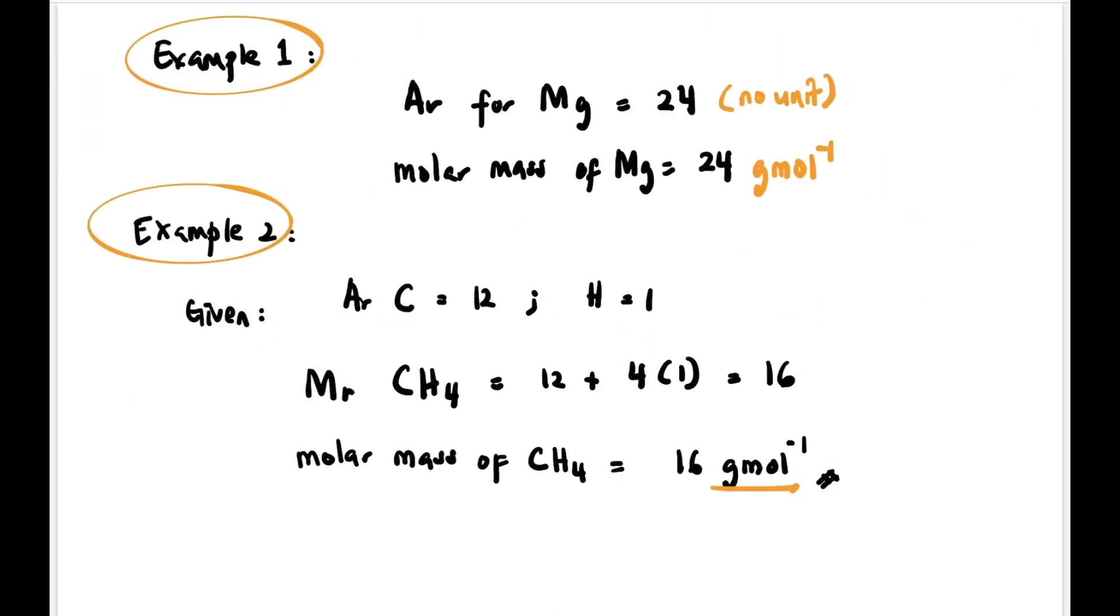For example, the molar mass and the Ar for Mg are both 24, but Ar has no unit while molar mass has gram per mol as unit. Example two: for CH₄, the molar mass and the Mr are both 16, but molar mass has unit—16 gram per mol.